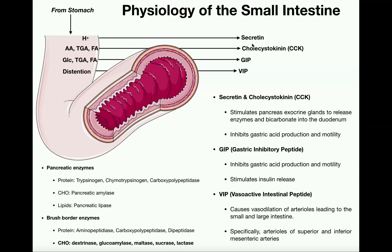Before we do that, let's think about what's entering the small intestine from the stomach. The stomach digests proteins with pepsin, an enzyme in the stomach, but it doesn't completely digest everything. We're still going to have large peptides entering the small intestine, and we may even have some intact proteins — for example, the casein protein in milk is not digested very well in the stomach and enters the small intestine more or less intact.